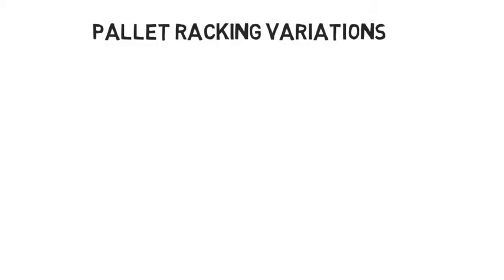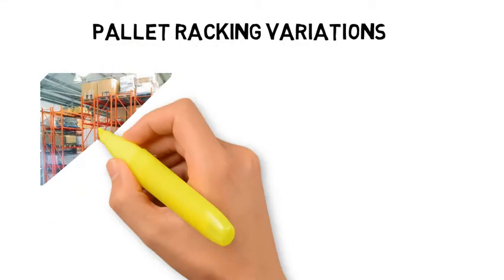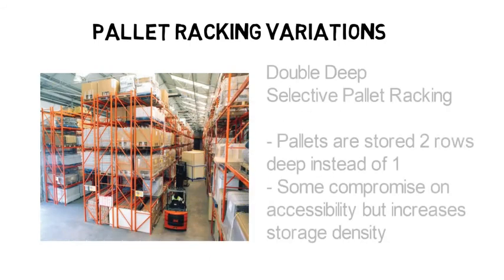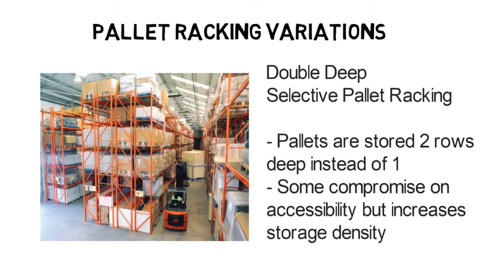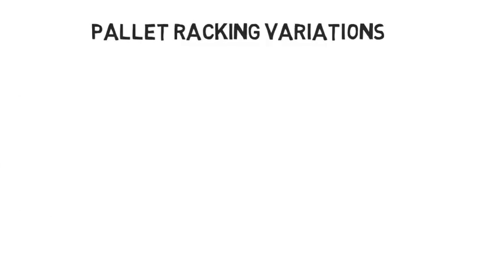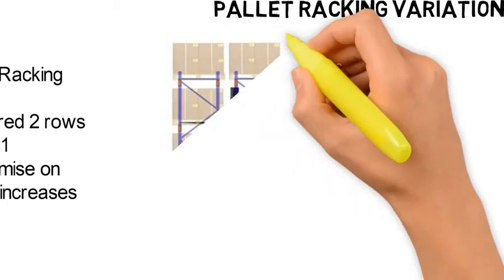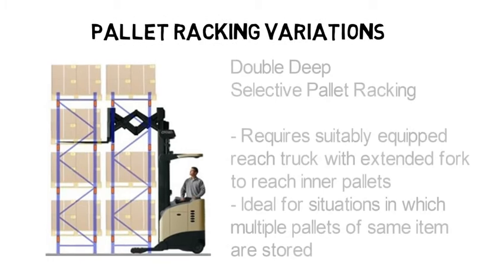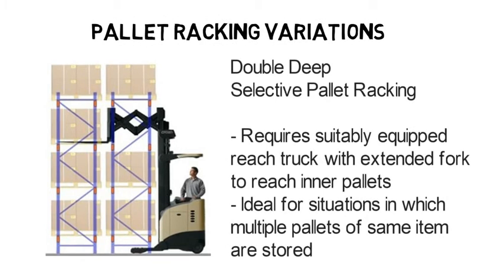In double deep selective pallet racking, pallets are stored two rows deep from each side instead of just one. This results in some compromise on accessibility but greatly increases storage density. In order to access pallets stored in the second row from the aisle, a reach truck with an extended fork is required. Double deep racking is ideal for situations in which multiple pallets of exactly the same item are being stored.